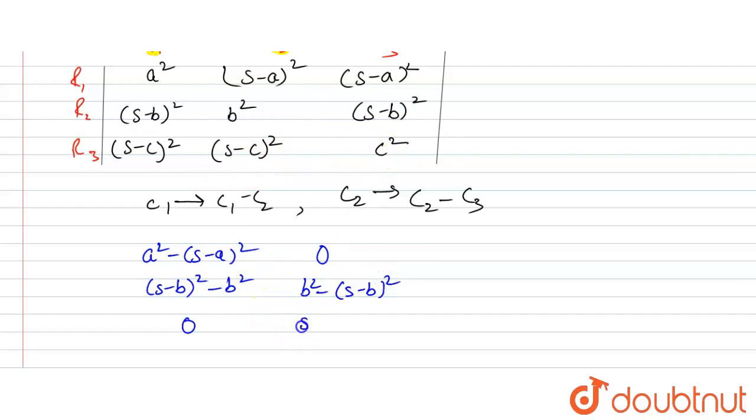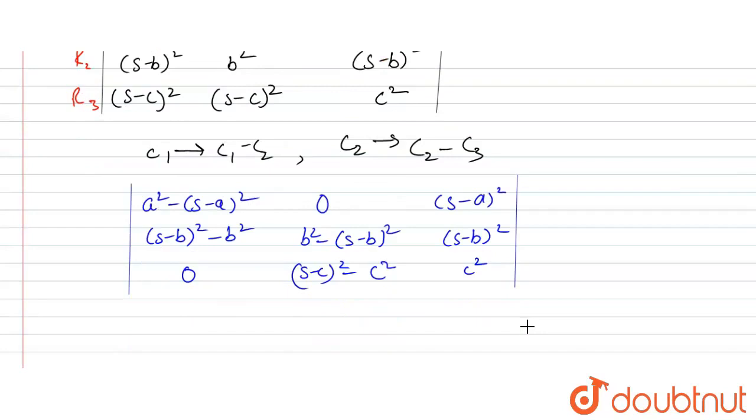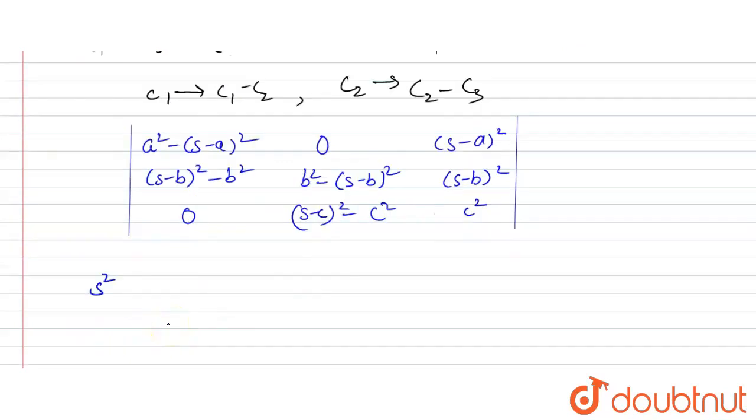s minus c squared, and it will be zero. b squared minus s minus b whole squared. So this is what we have got from these changes. Now, we will try to solve this. So first, we will take common s squared. No wait, don't take common first, otherwise you'll get confused.